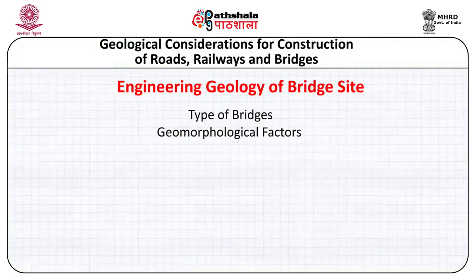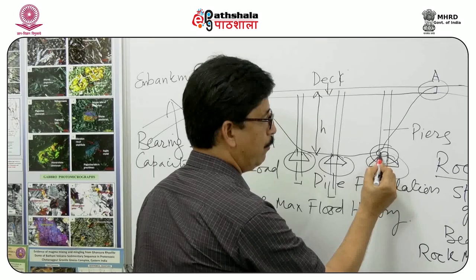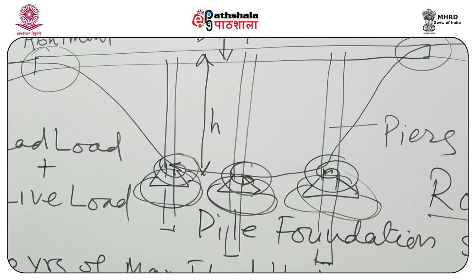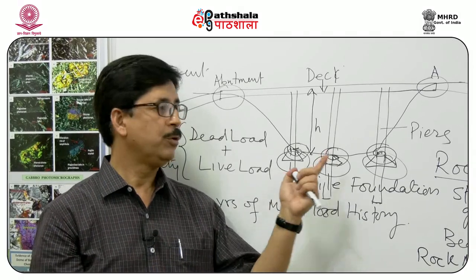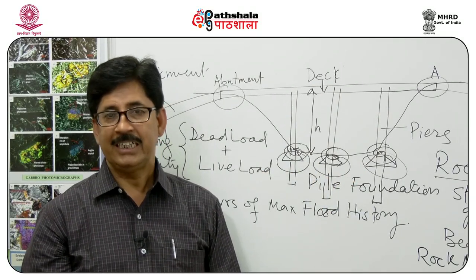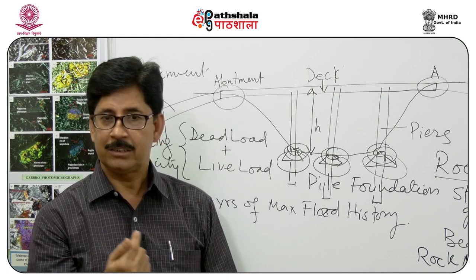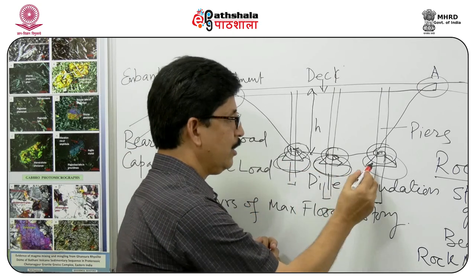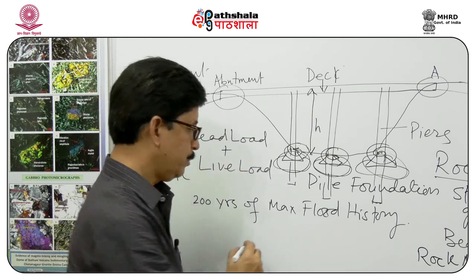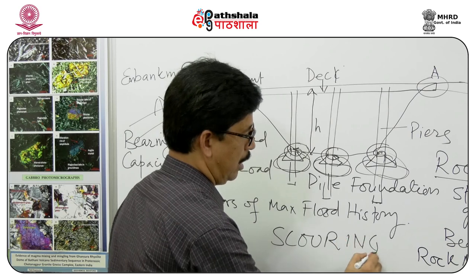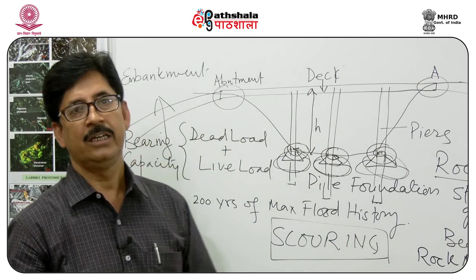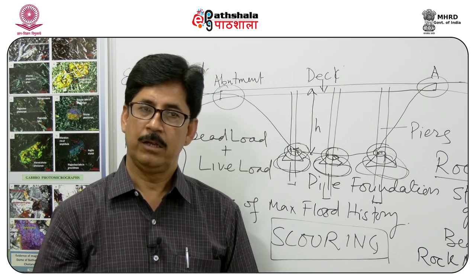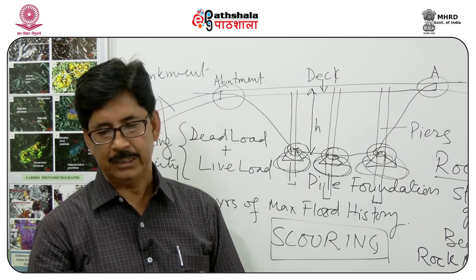Another issue is the formation of eddies along the bridge piers. These eddies form because of restriction in flow due to the presence of the piers. The eddies result in circular motion of water, which erodes the material around the bridge piers. This problem is called scouring. Scouring will result in exposure and weakening of the foundation, so it is an important issue which has to be taken into consideration.